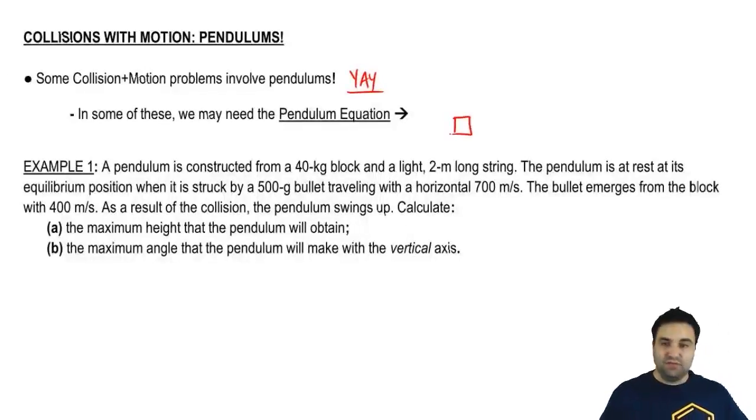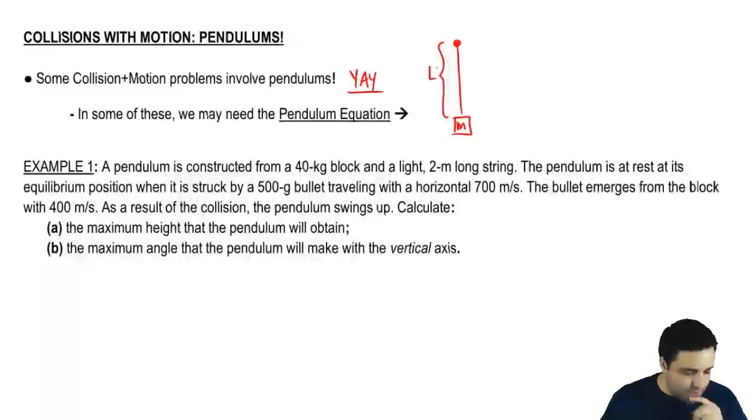So pendulums are made of a bob, a mass at the bottom. Let's put a little M there. And then there is a string. This string is always going to be massless. And it has a length L. Okay, and then the pendulum is then going to be hit by something and go up. Ends up over here somewhere.